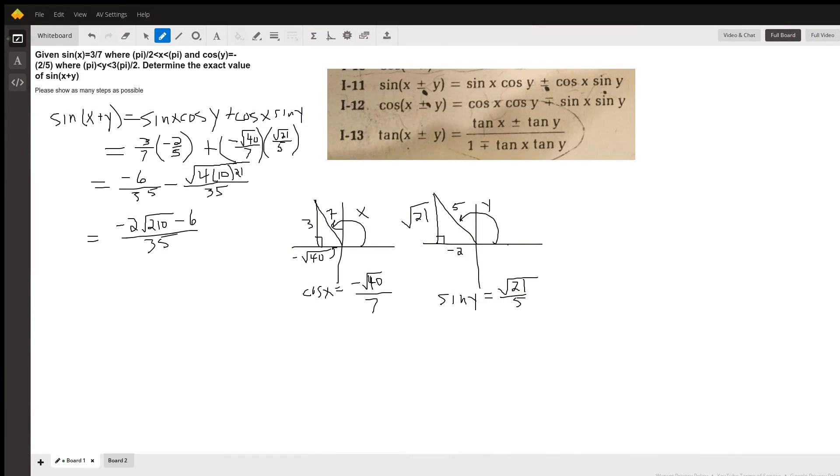So here's the trig identity that we're going to use to find the exact value for the sine of x plus y. That is, the sine of the sum of two angles x and y is equal to sine of x cosine y plus cosine x sine y.